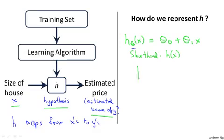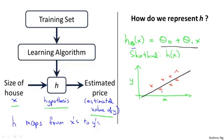And plotting this in pictures, all this means is that we are going to predict that y is a linear function of x. So that's the dataset, and what this function is doing is predicting that y is some straight line function of x. That's h(x) = θ_0 + θ_1*x.